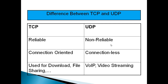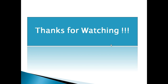In summary: UDP is non-reliable and connectionless. TCP is connection-oriented and reliable, used for file downloads. UDP is used for video streaming. Thanks for watching, until next time.